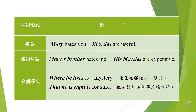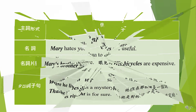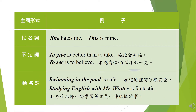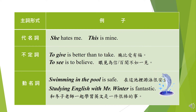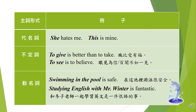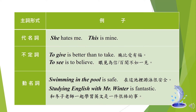所以你可以發現這三種形態的主詞都常被拿來當作句子的主詞。接著我們來看另外三種主詞的形式。第一種是代名詞：She hates me，主詞是代名詞 she。This is mine，主詞很明顯是代名詞 this。第二種是不定詞。